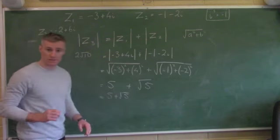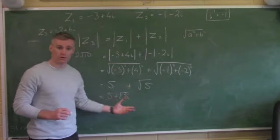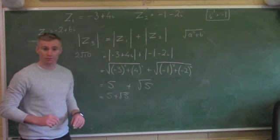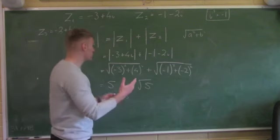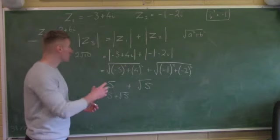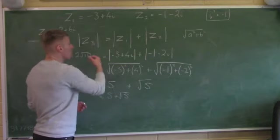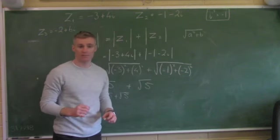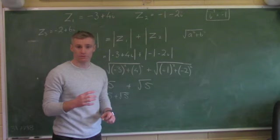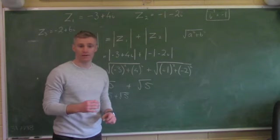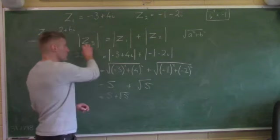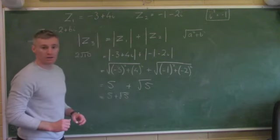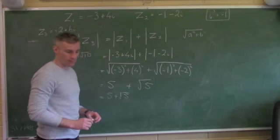I've probably got 4 out of 5 marks here. I need to state a simple conclusion to get full marks: the modulus of Z3 is not equal to the modulus of Z1 plus the modulus of Z2. The question asked me to investigate, so just to recap — my conclusion at the end is these are not equal to each other.